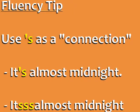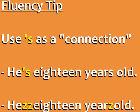Fluency tip: use apostrophe S as a connection. For native speakers, words that end in apostrophe S are often connected to the next word. We don't normally pronounce all the words individually. For example, 'It's almost midnight' — we use the apostrophe S to connect the first two words. Can you hear how the S is connected to 'almost'? It's almost. The S can also serve as a connection when pronounced as Z, like in 'he's 18 years old.'